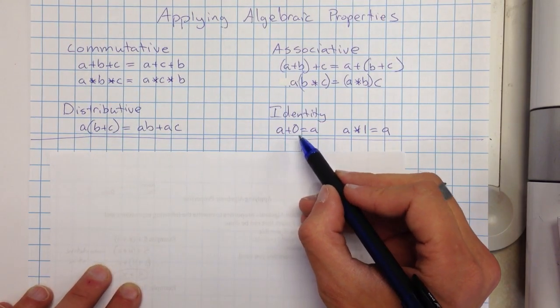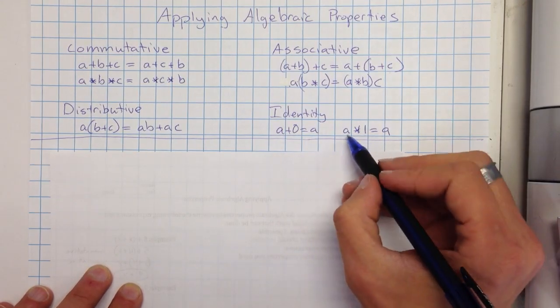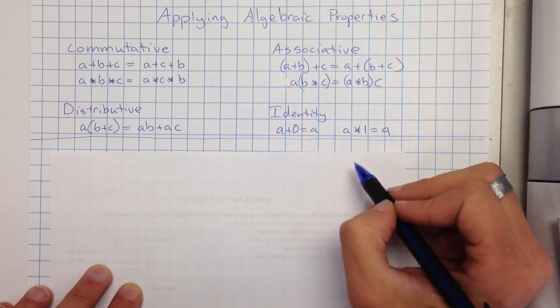And then identity just means the number is staying the same. So if I add zero to any number, it's going to stay that number. If I multiply any number by one, it's going to stay to be the same number.